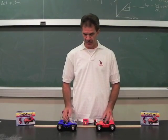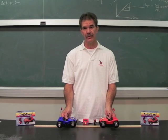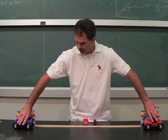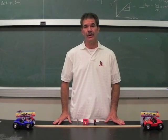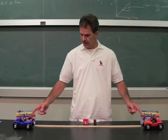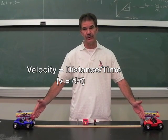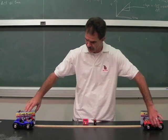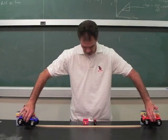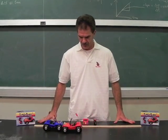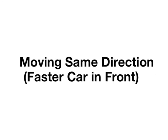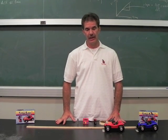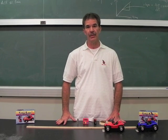In order to determine the relative speed as the two cars approach each other from opposite directions, students simply need to place the cars a designated distance apart. Both cars are turned on at the same time and timed until they meet. That distance closed divided by the time it takes is the relative speed.